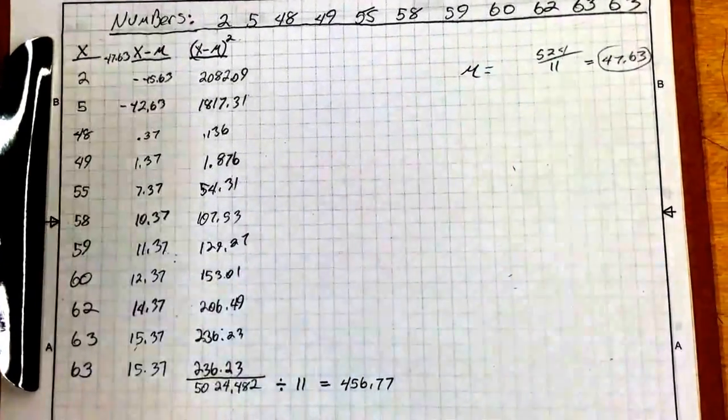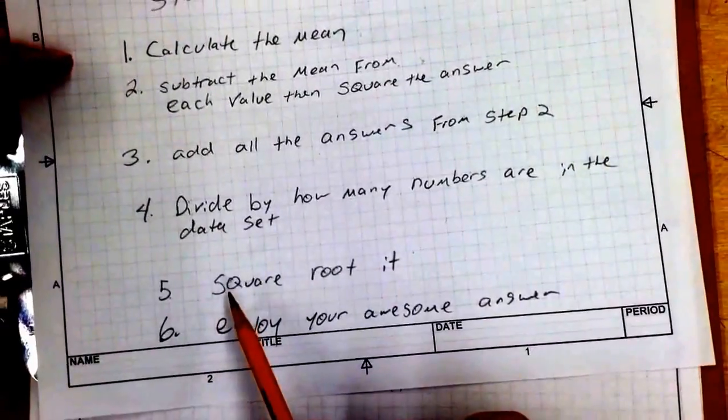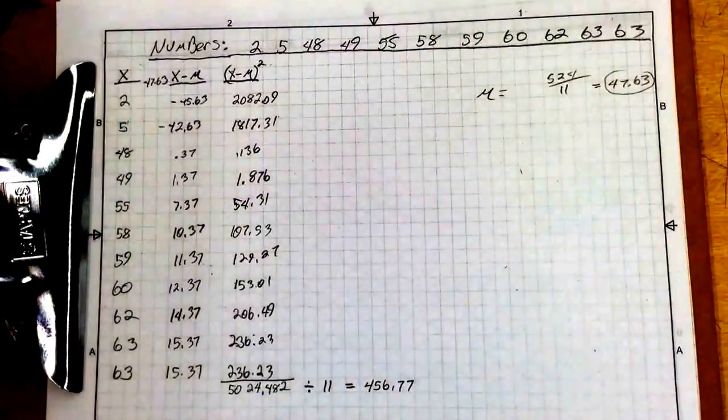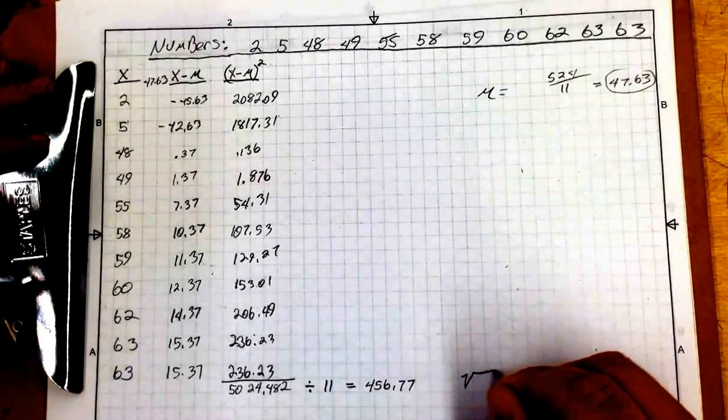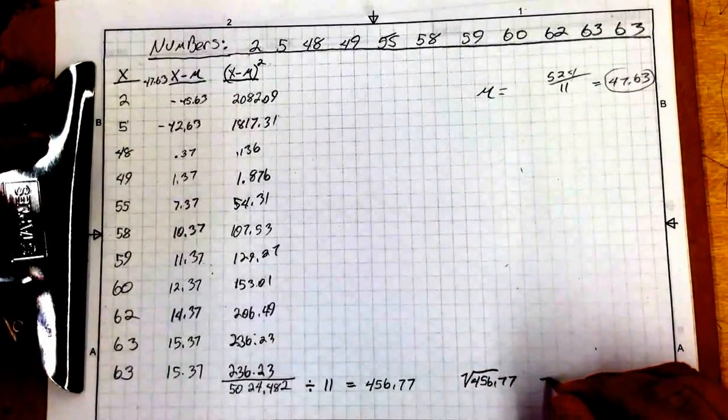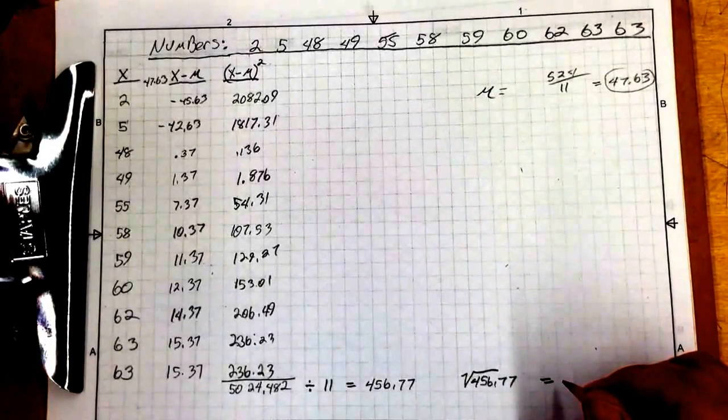If you remember, the next step is to square root it. So we have to do the square root of this. So the square root of 456.77 equals, drum roll please, 21.37.